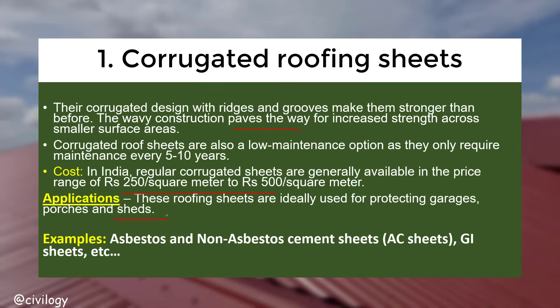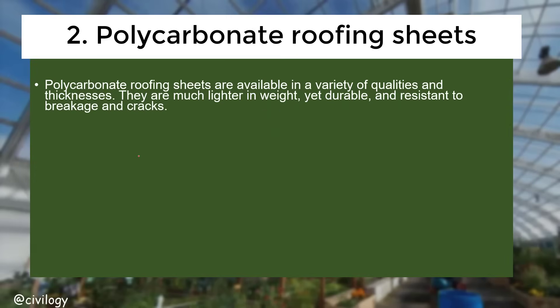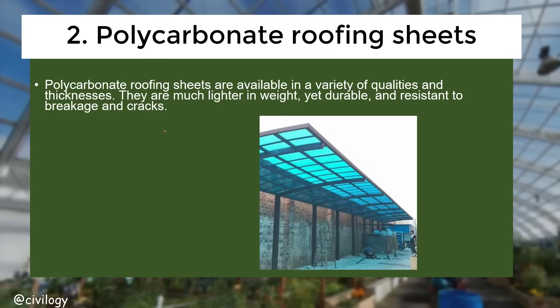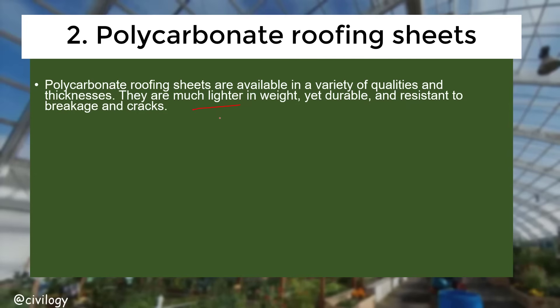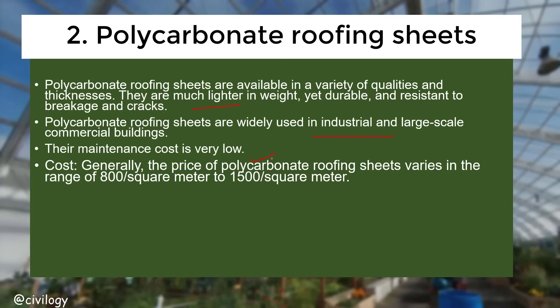Next, polycarbonate roofing sheets. These are available in a variety of qualities and thicknesses. They are much lighter in weight, durable, and resistant to breakage and cracks. Polycarbonate roofing sheets are widely used in industrial and large commercial buildings, and their maintenance cost is very low.